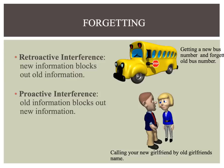Sometimes new memories can block the recall of old memories, and old memories can block the retention of new memories, leading to forgetting. The two types of interference with our memory are retroactive and proactive. Retroactive interference is when new information blocks out old information — for example, you get a new bus number and forget your old one, or you get a new schedule and forget your old route to each class.